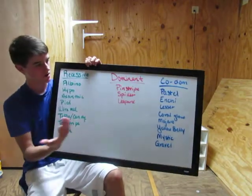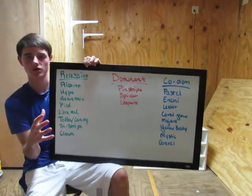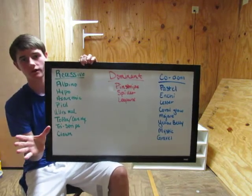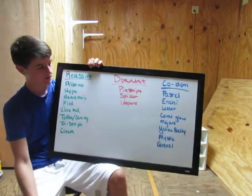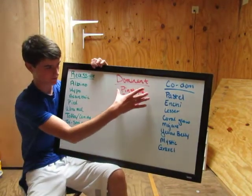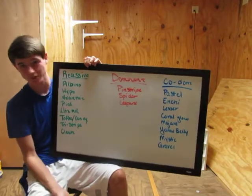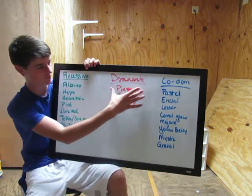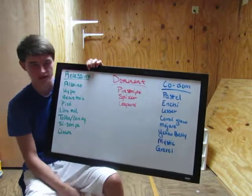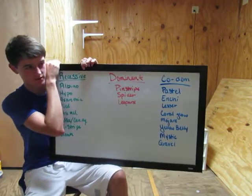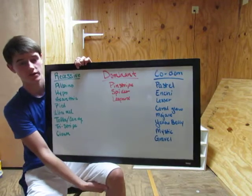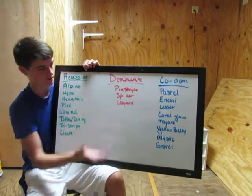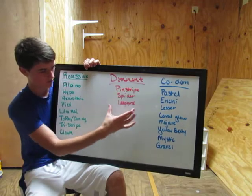Super forms: if you breed a pastel to a pastel, a quarter of that clutch will be super pastels, meaning that animal cannot produce a normal — everything it produces will at least be pastel. That doesn't happen with dominant genes. If you breed a pinstripe to a pinstripe, three quarters of the clutch will be pinstripe and a quarter normal, but no supers at all. Whereas pastel to pastel gives you a quarter super pastel, half pastel, and a quarter normals.